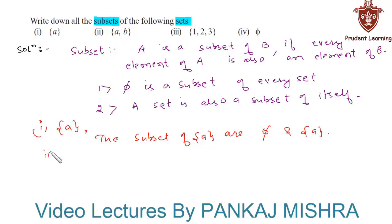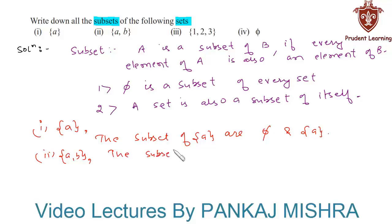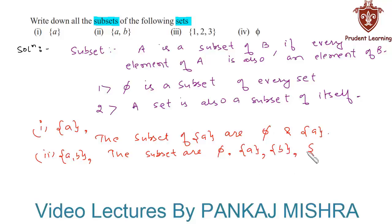In the second section, the set contains the elements A and B. The subsets of this set are: the null set, the set containing element A, the set containing element B, and the set itself.